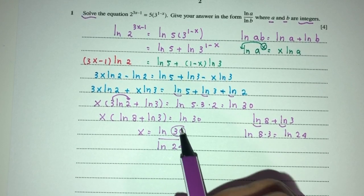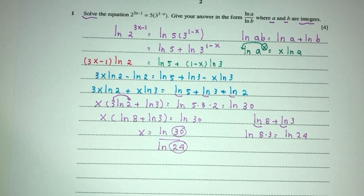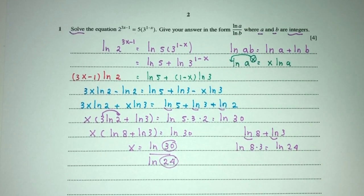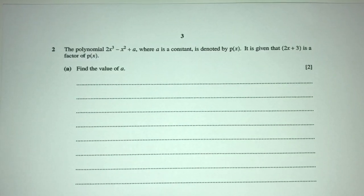So a and b are these integers to be found — that is your question number 1. Now let's move on to question number 2.